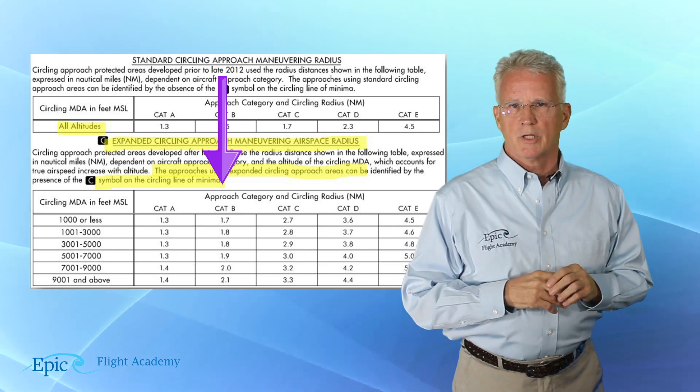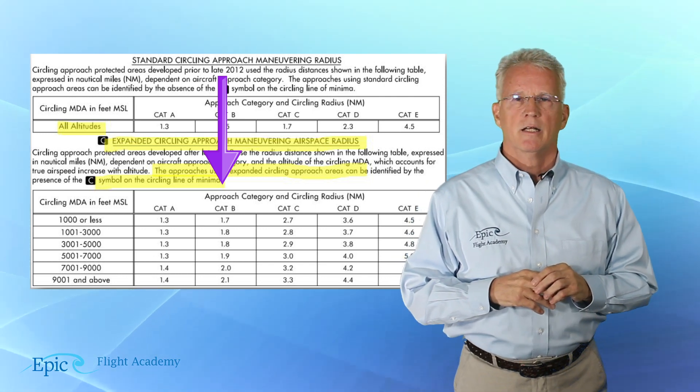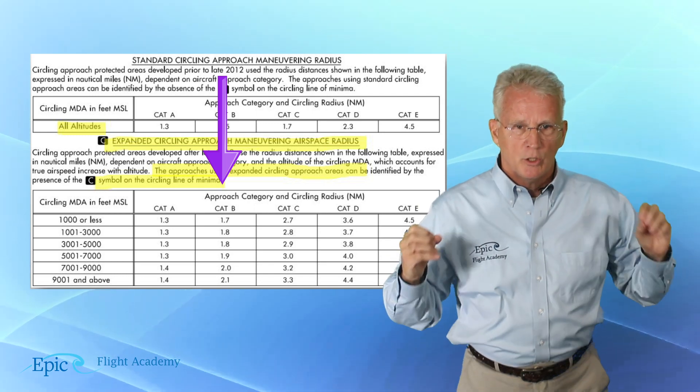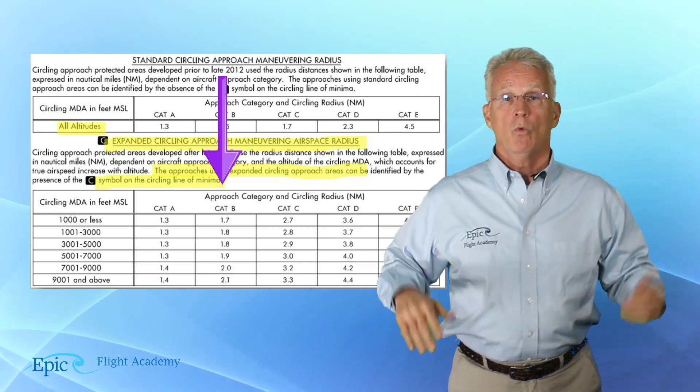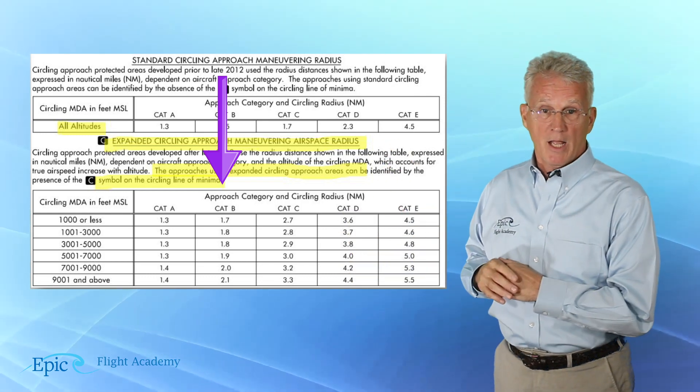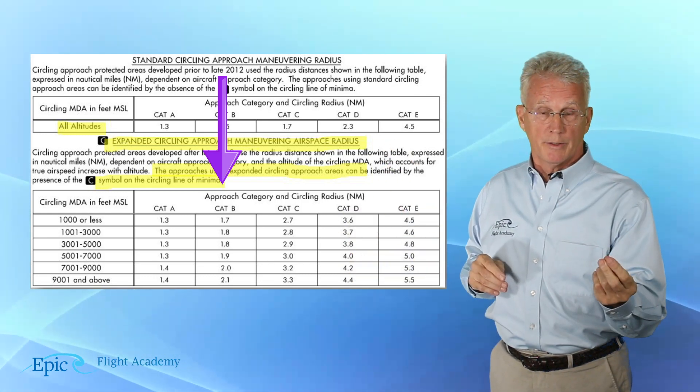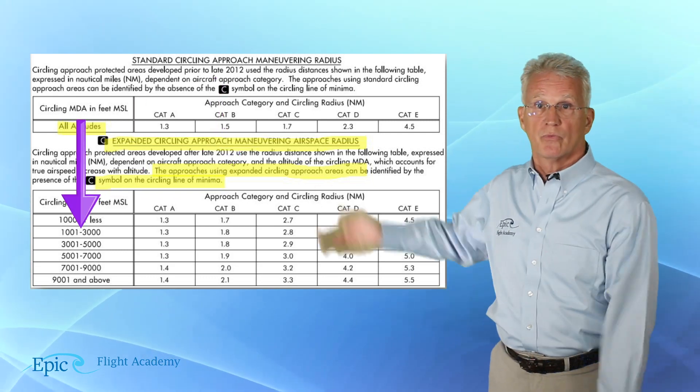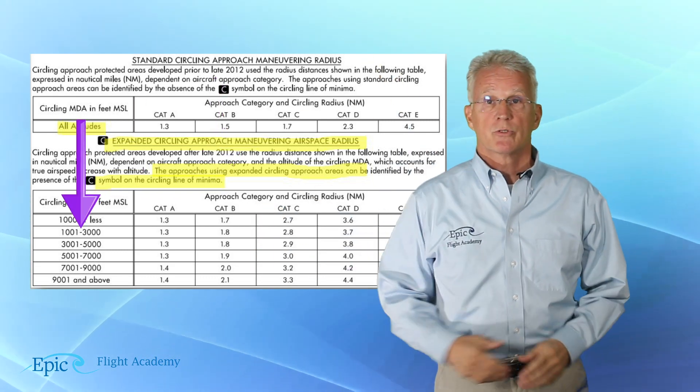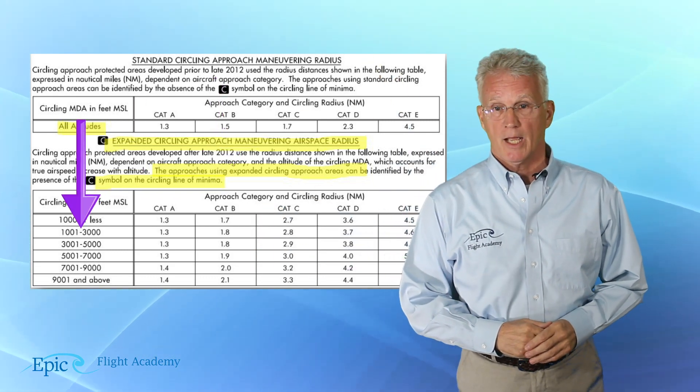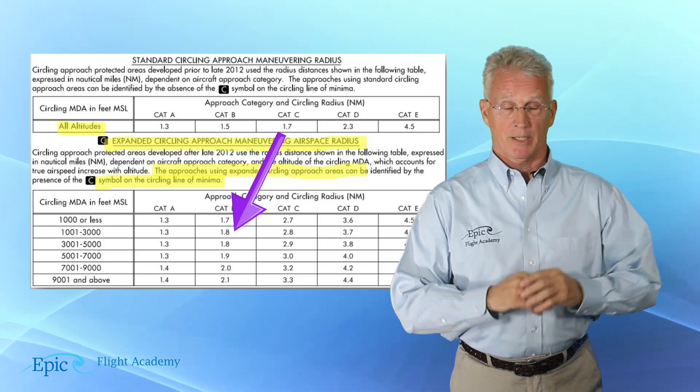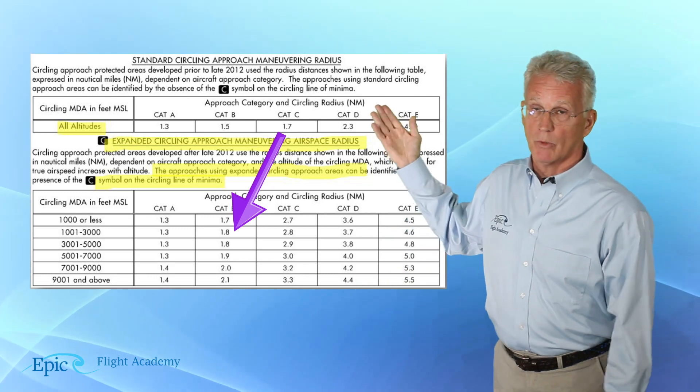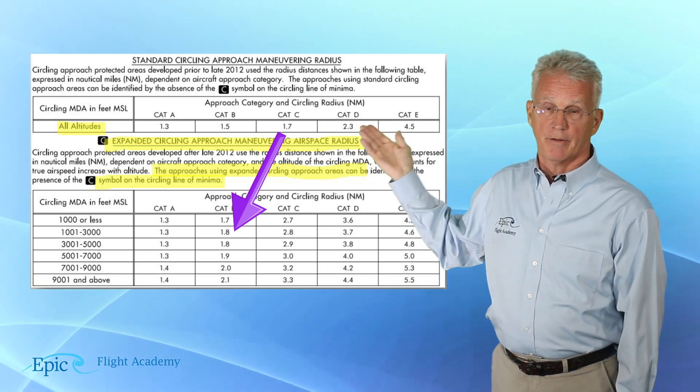Well, if I look in the left-hand column, I see from 1,001 to 3,000 feet, my new circling minimum in category B would be 1.8 miles as opposed to the original 1.5.